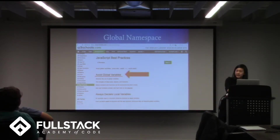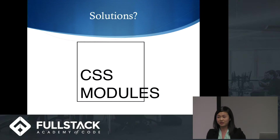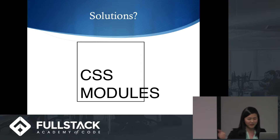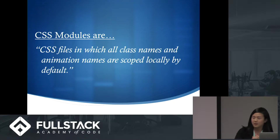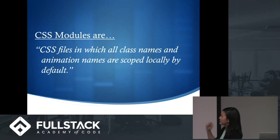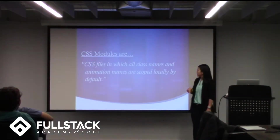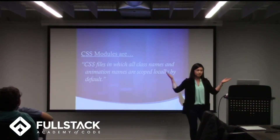So how do we solve this? Enter CSS Modules. Note that this is just one solution — it's not the end-all be-all, there are others out there. But this is the one I chose. According to the CSS Modules GitHub repo, they are CSS files in which all class names and animation names are scoped locally instead of globally by default.